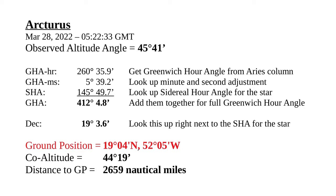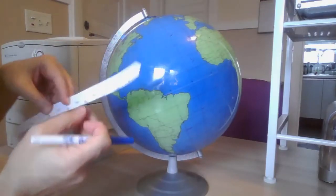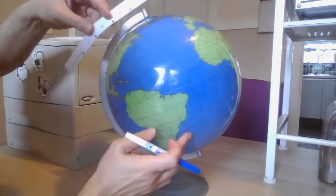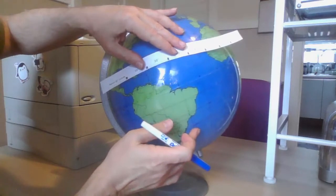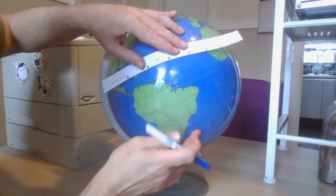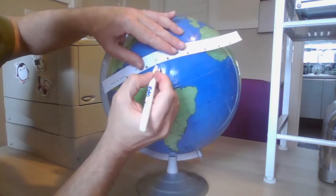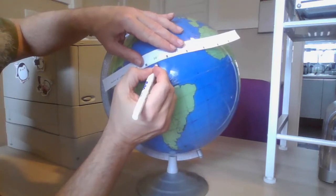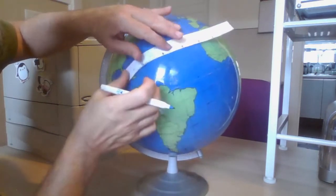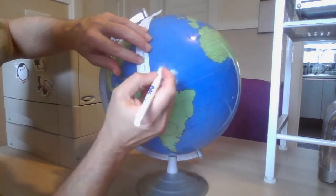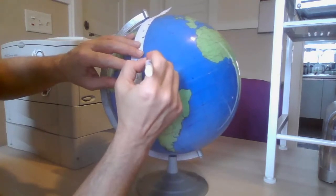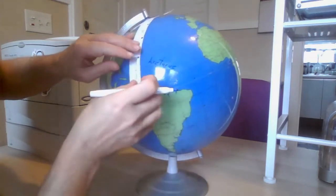Now we need to find the GP for Arcturus, which is at 19 degrees 4 minutes north and 52 degrees 4 minutes west. So 19 degrees would be just slightly below 20. Using the longitude scale for 20 degrees, 45 is right there. So we're looking at right about here — 52 degrees, then down about a degree. Let's measure it and check. Yes, that's about right. That is the GP for Arcturus.